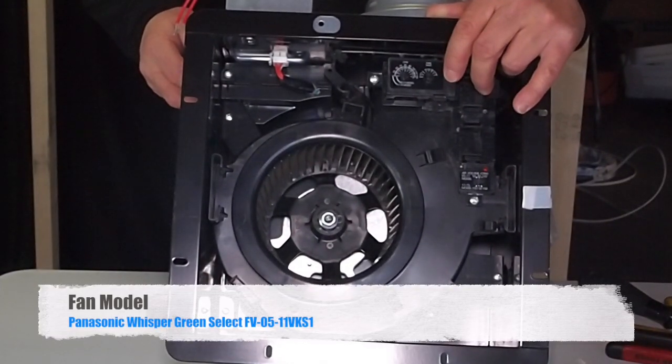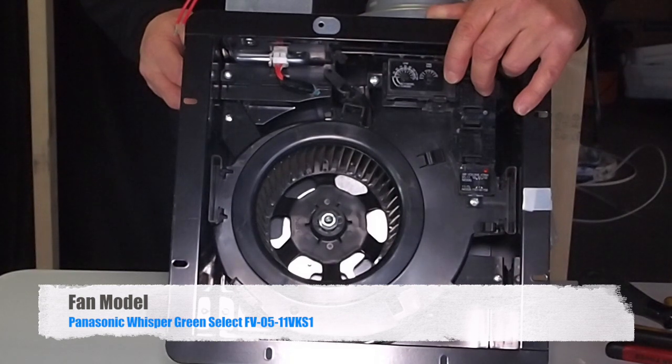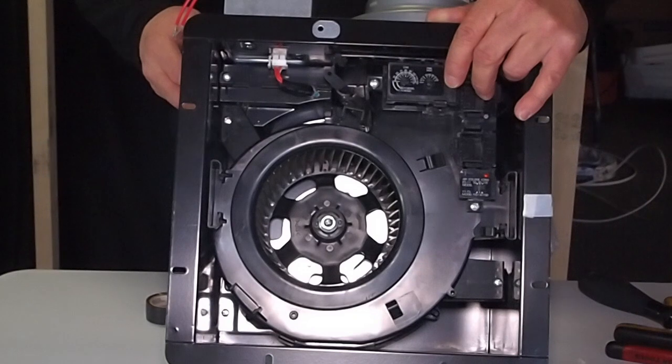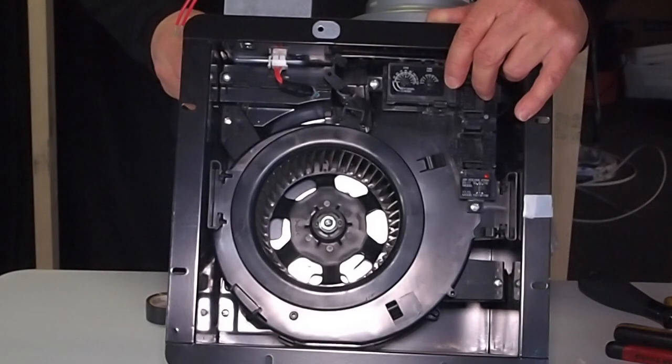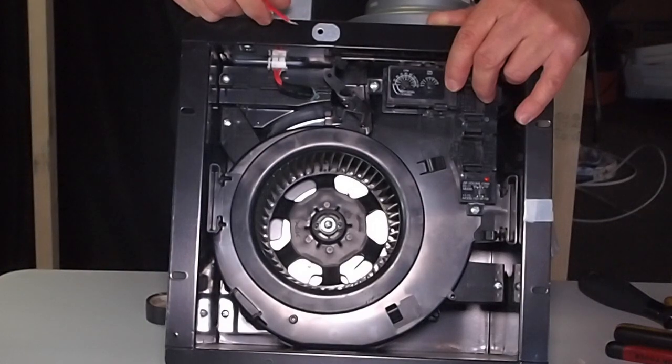The fan we are wiring is a Panasonic Whisper Green Select FV0511VKS1. This fan has a multi-speed timer pre-installed. We will use the red signal wires to get the fan to do spot ventilation.